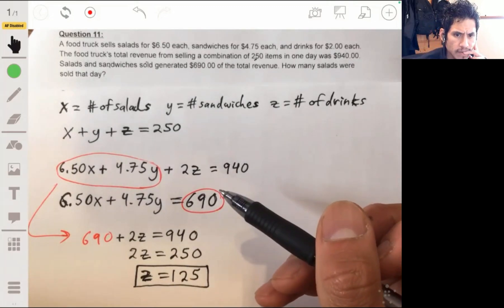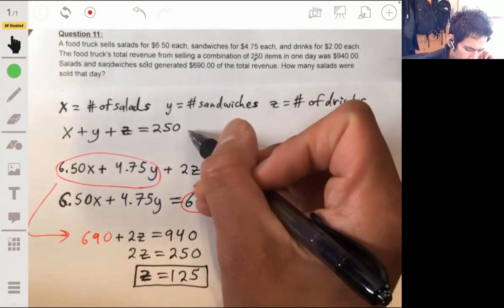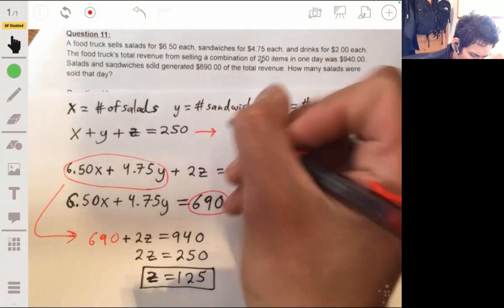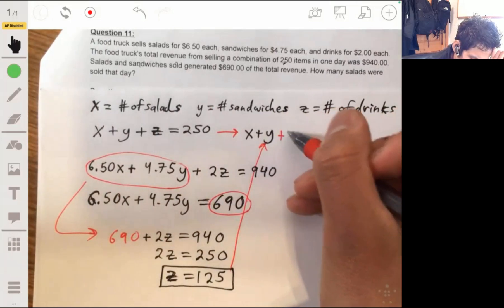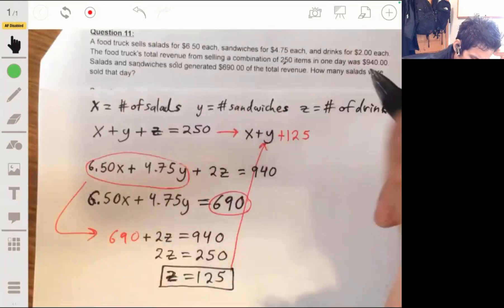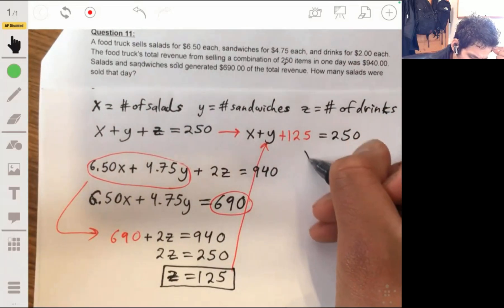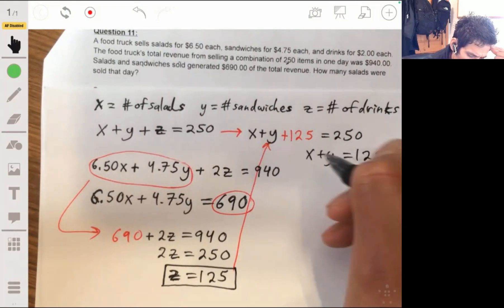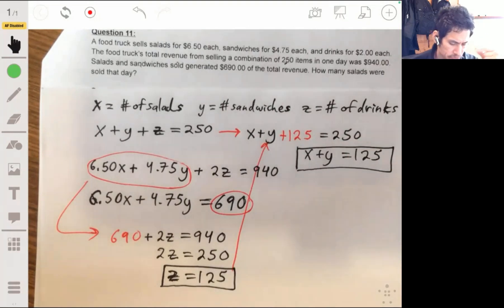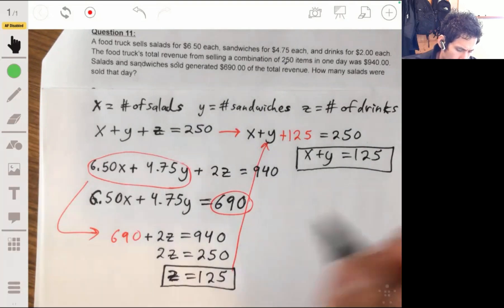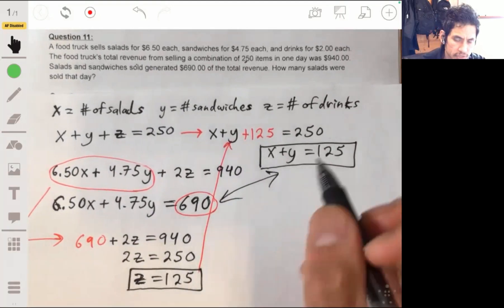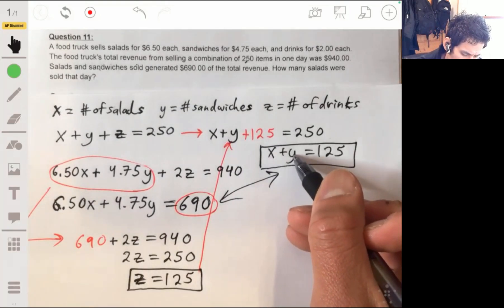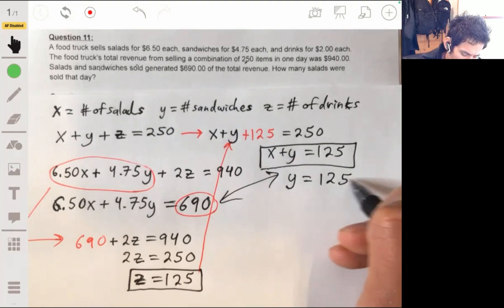From that, we can go and then have that be substituted in as 125. So we can have X plus Y plus 125 equals 250. And then we know that X plus Y equals 125. Alright, let's see what else. Okay, so now we can just use these two equations to solve, basically, a two-variable system.